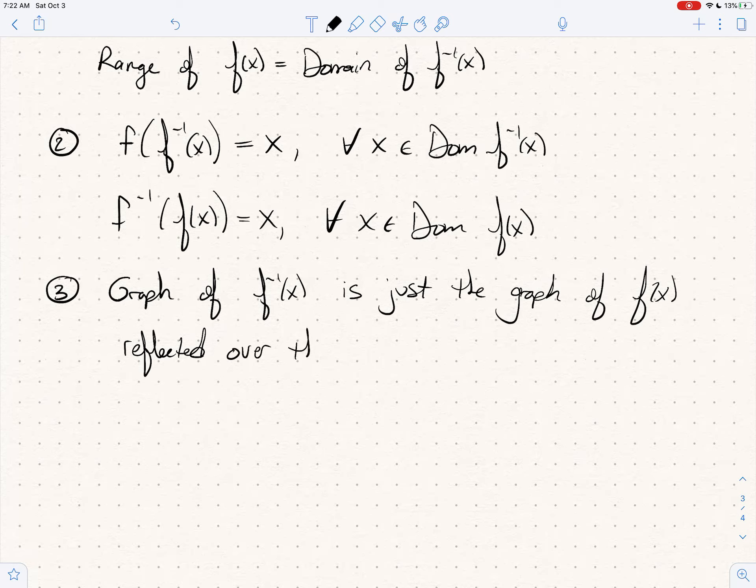Reflected over the line y equals X. You just quite literally take the graph of F, you flip it over the line y equals X, and you get the graph of F inverse of X. So that's a really key fact to know.